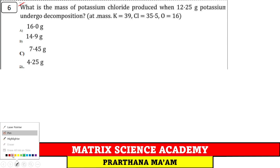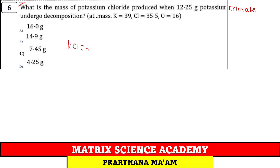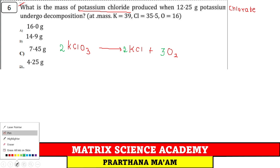Question number 6. What is the mass of potassium chloride produced when 12.25 gram potassium chlorate undergoes decomposition? Potassium chlorate KClO3 on decomposition gives potassium chloride and oxygen O2. Balance the reaction - 3 oxygen on right, so coefficient 3 on O2, which is 2 into 3 equals 6, so 2 on KClO3 and 2 on KCl. Find mass of 2 KClO3.